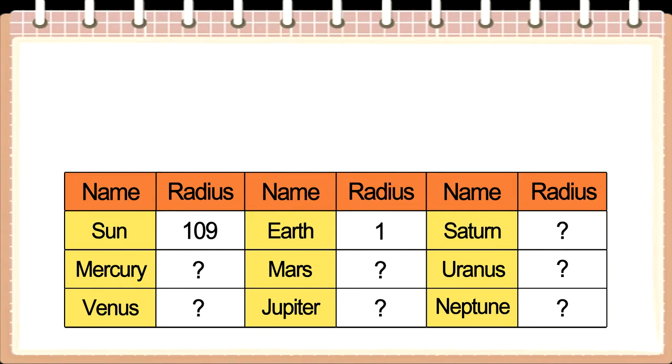If we compare the radii of planets in the same manner, Mercury is 0.4, Venus is 0.9, Mars 0.5, Jupiter 11.2, Saturn 9.4, Uranus 4.0, and Neptune is 3.9.